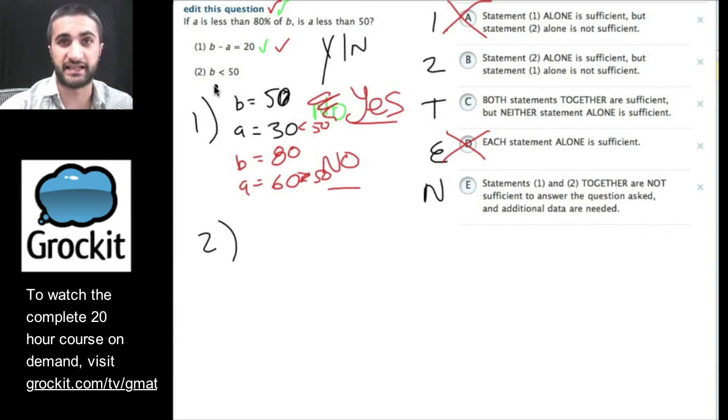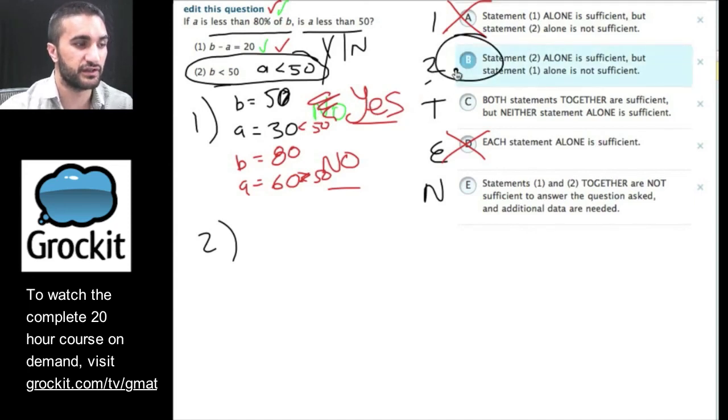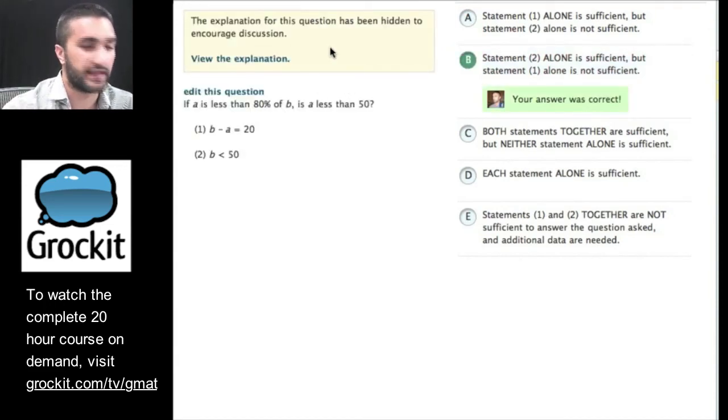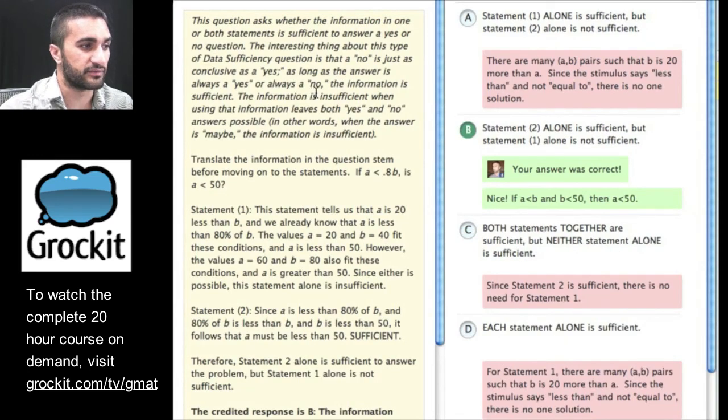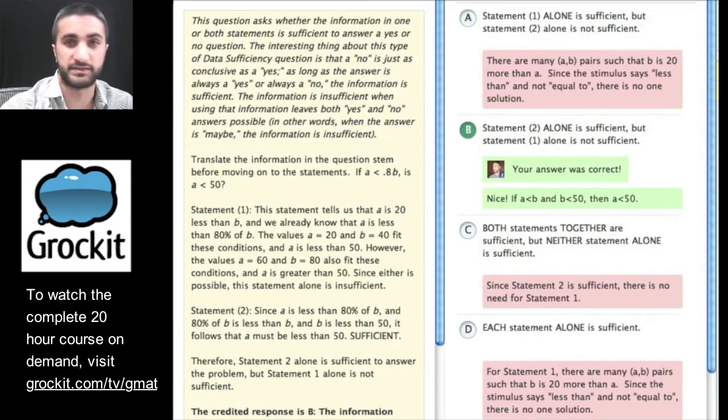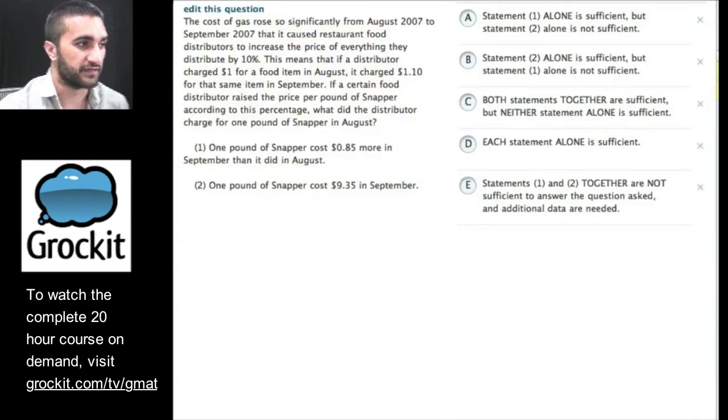So, this one says B is less than 50. And we also know that A is less than 80% of B. So, A is going to be even less than that. A is going to also be less than 50. And that's all they're asking us. And in this situation, if B is less than 50 and A is smaller than B, A will always be less than 50. So, two is sufficient. We should be able to pick that, confirm it, and we're correct. And remember, if you're a Grokit Standard member, you can always view the explanation and spend some more time working on the question if you have any difficulty with it.